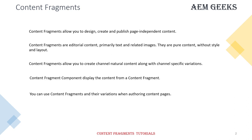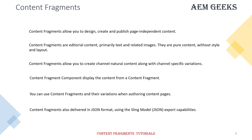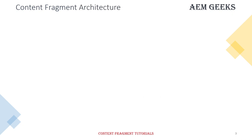You have to use a content fragment component to use the content of a content fragment on pages. There is a default component available in the core components, but you can create your own component as well. Content fragments also export content in JSON format using the Sling Model export capability, which we have already seen in how content is exported using Sling Model.